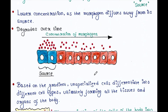Based on this gradient, unspecialized cells differentiate into different cell types, ultimately forming all the tissues and organs of the body. A gradient is formed from the highest concentration to the lowest concentration. These brown cells are undifferentiated cells and will be differentiated based on the concentration of morphogen they are receiving.